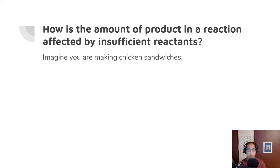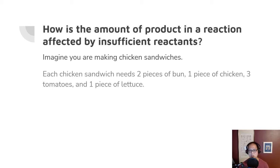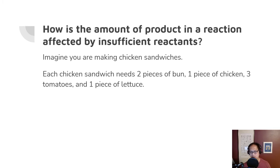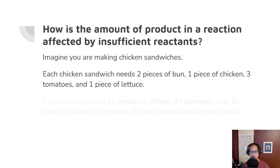We're going to use a more practical example today — we're going to talk about chicken sandwiches. So imagine you're making chicken sandwiches. These chicken sandwiches are going to have four ingredients: two pieces of bun, one piece of chicken, three tomatoes, and one piece of lettuce. It's a dry sandwich, but I don't want to deal with the volume of mayo or spicy sauce, so we're just going to go with this.